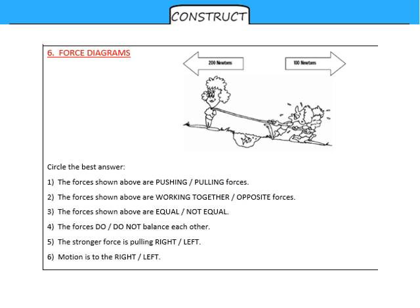Now, on this force diagram, we have another tug of war. The person on the left has a force of two hundred newtons. The people on the right have a force of one hundred newtons between them. And once again, I'd like you to pause here and to pick the right answer from the two words or statements that are written in capital letters. So pause now and unpause when you're ready to check your answers.